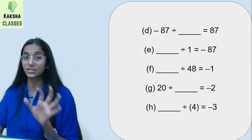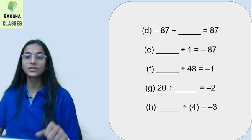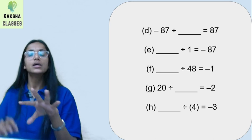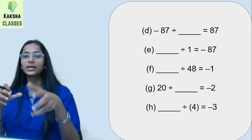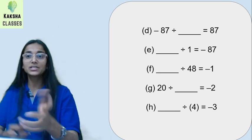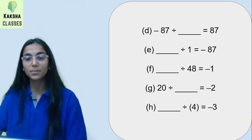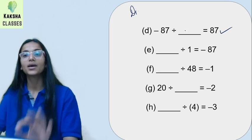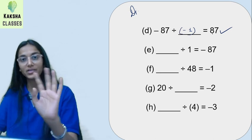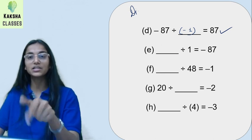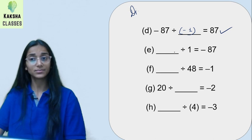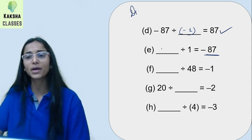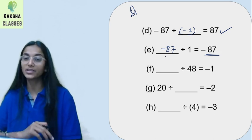Let's move towards the next one. Now the first thing here gives equals to minus 87. You have to know: negative dividend divided by negative divisor — or divisor negative — so the answer is simply minus 87. There will be minus 87. Correct?